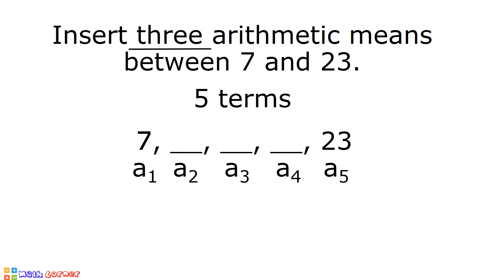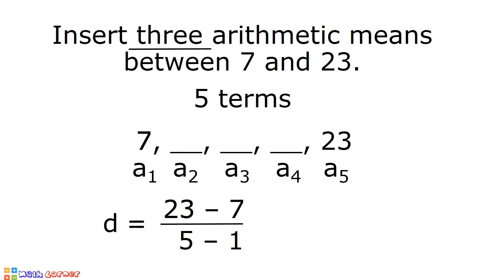To do that, let us first solve for the common difference using the shorter way. We subtract: 23 minus 7 divided by 5 minus 1. 23 minus 7 is equal to 16. 5 minus 1 is equal to 4. 16 divided by 4 is equal to 4. And that is our common difference.